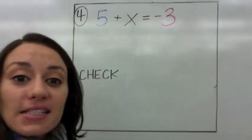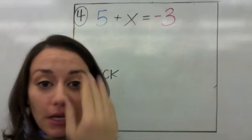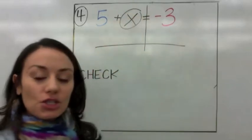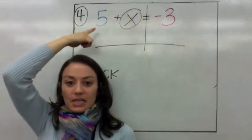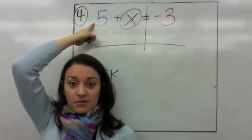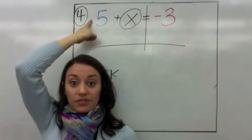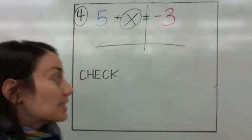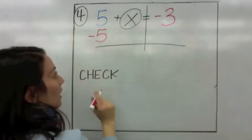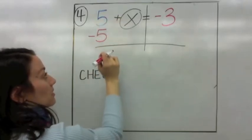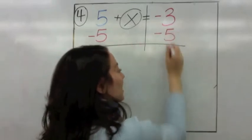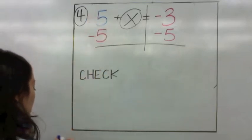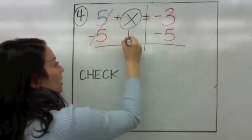Let's read our last example together. It says 5 plus x equals negative 3. We start by drawing a T to solve for x. Circle x. Look at the number next to x — it's 5. Is it positive 5? Yes, it's blue, it's positive. If there's no sign, you can assume it's positive. What is the opposite of positive 5? It is negative 5 — you're always playing the opposite game. So subtract 5 from both sides. A positive 5 and a negative 5 make 0. Bring down the x.